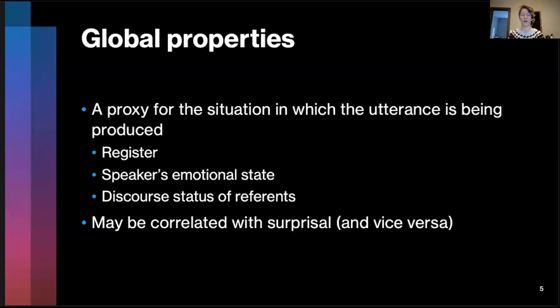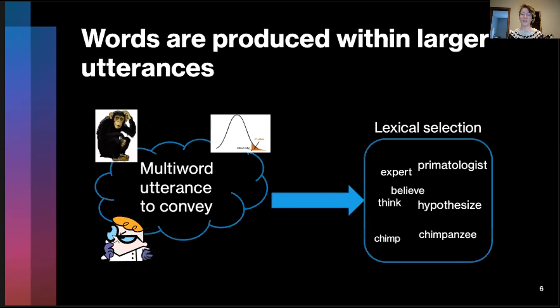I'm going to define for you the global properties that we're interested in. Multi-word production reflects things like the register that we're trying to speak in—is it spoken, is it written, is it a formal versus an informal context, even things like my emotional state and the discourse status of reference. We have a whole lot of contextual factors, global properties of an utterance, all the ambient information that can be encoded in speakers' messages. Some of these may be correlated with surprisal. If we go back to reconsider this figure where we have the scientists, the chimpanzee, and its scientific thinking, we actually have to consider that speakers are choosing to produce these words simultaneously, so they have to optimize their choices together.